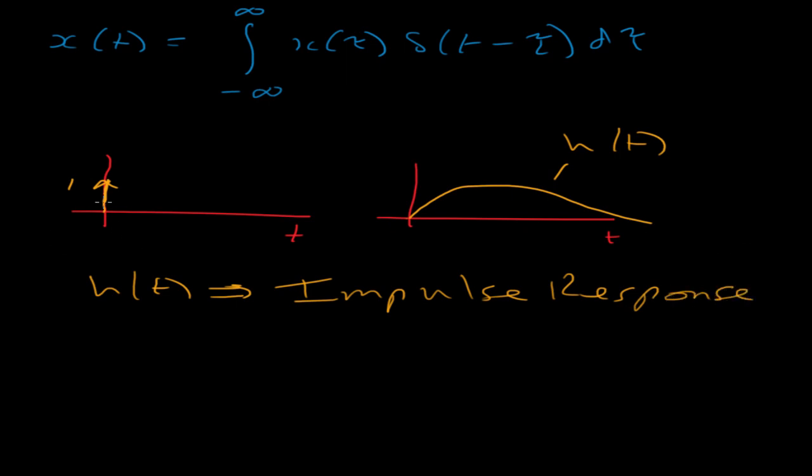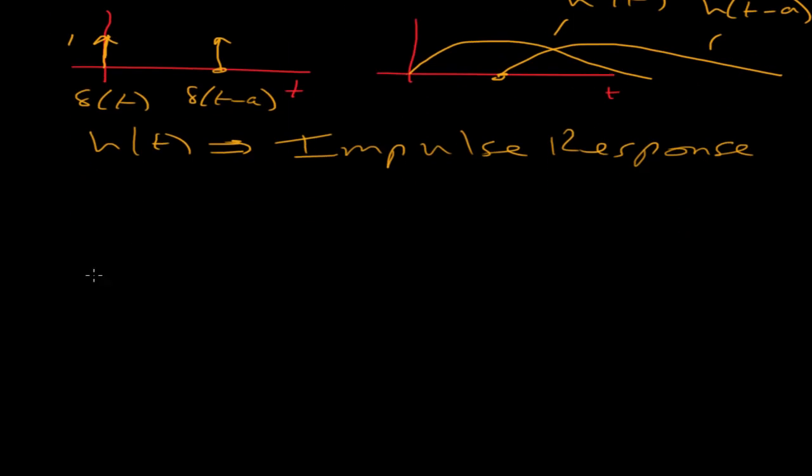What happens if I were to move the impulse along? This is delta t. What happens if I move the impulse along there to t minus a? What happens to the response then? As long as we assume this system is time invariant, all that happens is that the response just moves on by the same amount of time. So now this is h t minus a. I can write down that given a shifted impulse at a, my response will be h t minus a.